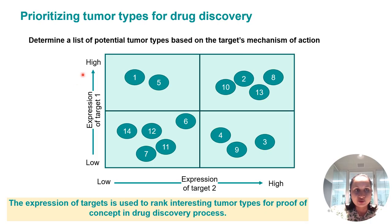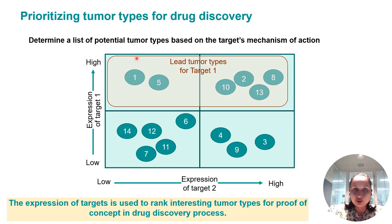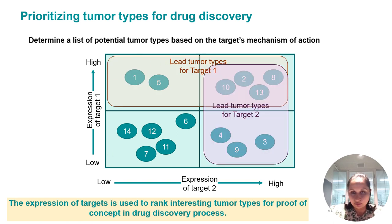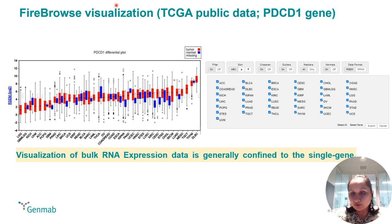The goal of the package is to identify a list of potential tumor types based on the target's mechanism of action. For example, we have different tumor types here divided into four quadrants based on low or high expression of target one or target two, so one can easily visualize the lead tumor types. This can also be done with standard visualization tools, for example Firebrowse visualization for a PDCD1 gene, which I will take along as an example for bi-functionality.